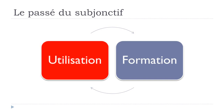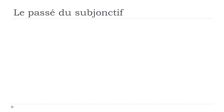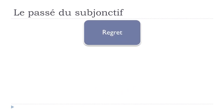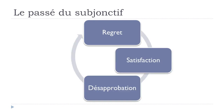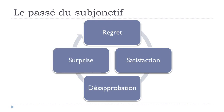Let's start with l'utilisation. We use the passé du subjonctif to express something that happened in the past, combined with expressions of regret, satisfaction, désapprobation, and surprise. Désapprobation can be translated as disapproval.